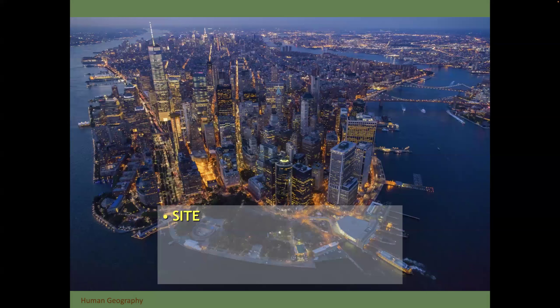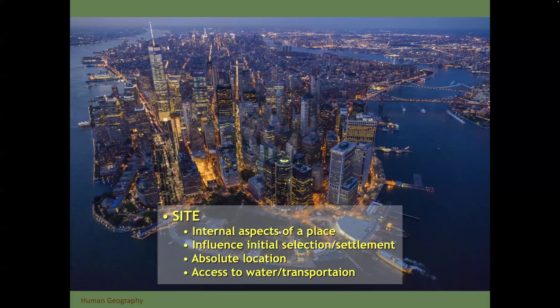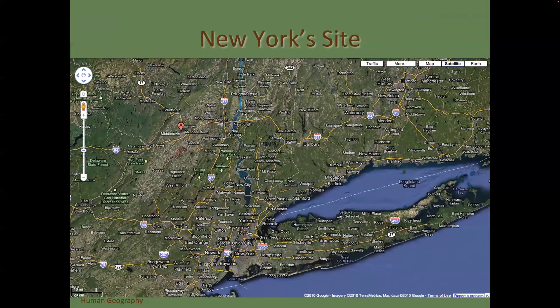Here's the idea of location — site versus situation. Notice how everything in orange is an area below sea level in New Orleans. New Orleans was placed where it was by the French because it was the entry point into French territory at the time — what eventually became the Louisiana Purchase. Here's another example: New York City. Site refers to the internal aspects of a place and influences why a place was selected to begin with. New York sits right on a natural harbor with access to the river and access to the ocean.